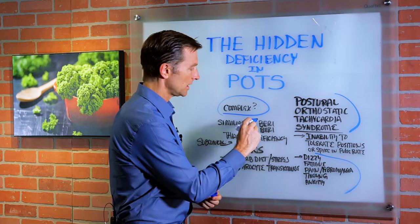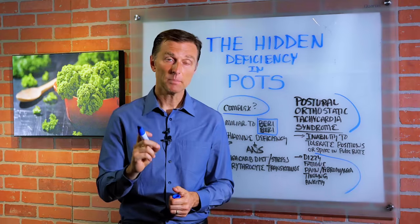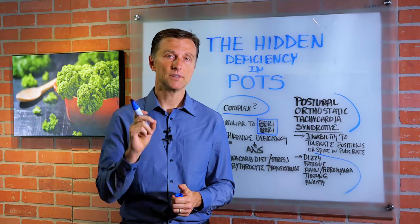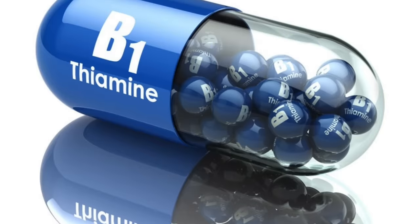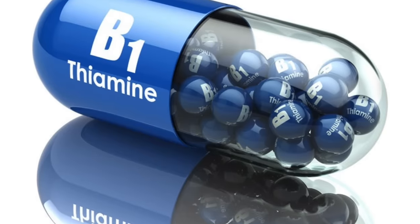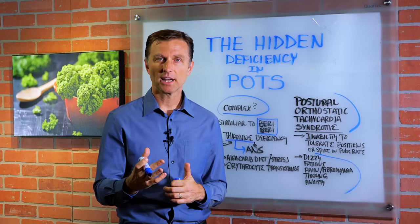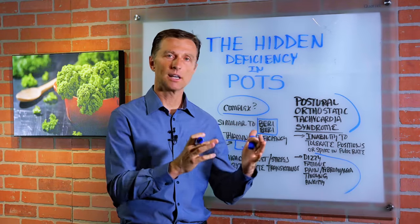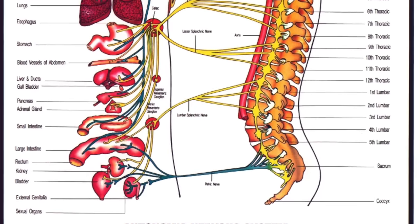But if you take a look at another condition called beriberi, the symptoms are very, very similar. Beriberi is a vitamin B1 deficiency. It's a deficiency of thiamine. Thiamine is intimately involved in autonomic nervous system function. In other words, it's a key player in the normal function of the autonomic nervous system, both the sympathetic nervous system and the parasympathetic nervous system.